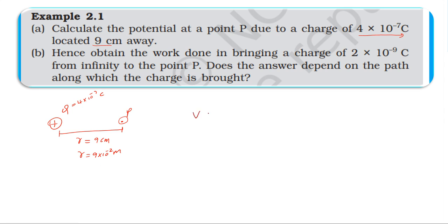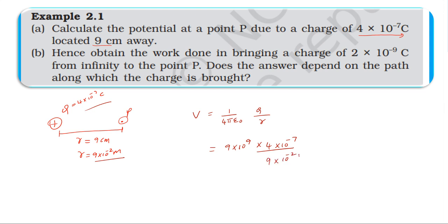The potential is equal to 1 divided by 4πε₀ into q divided by r. The value of 1/4πε₀ is 9×10⁹. So we substitute: 9×10⁹ into q value of 4×10⁻⁷, divided by r value of 9×10⁻² meters.